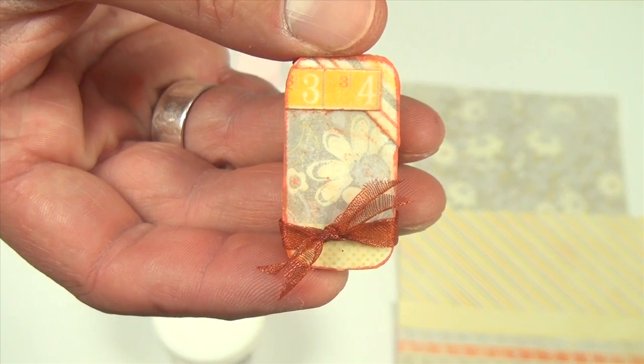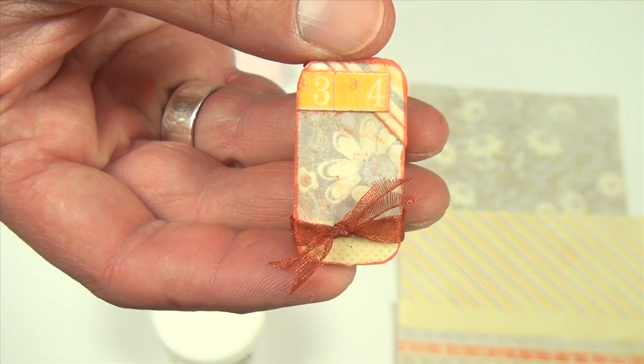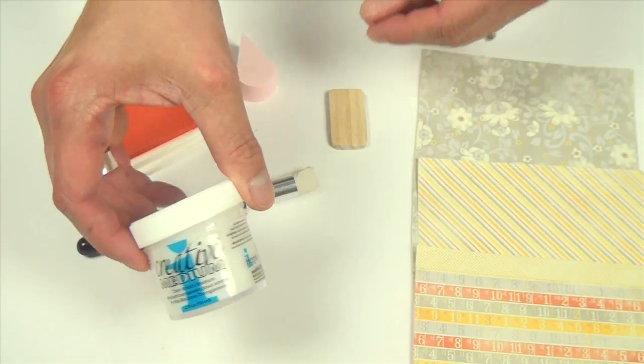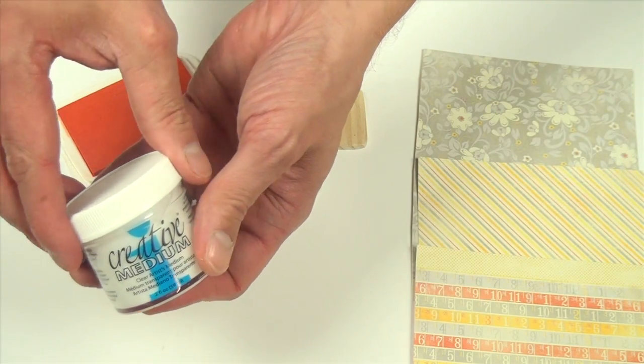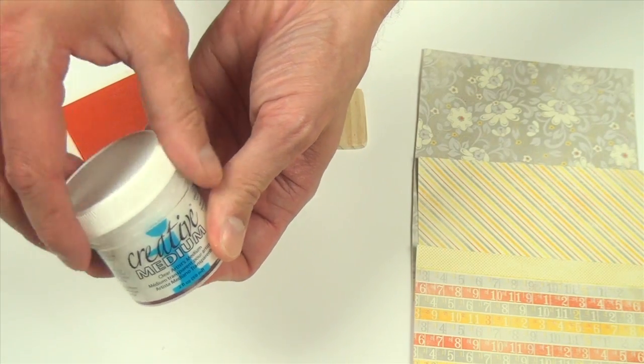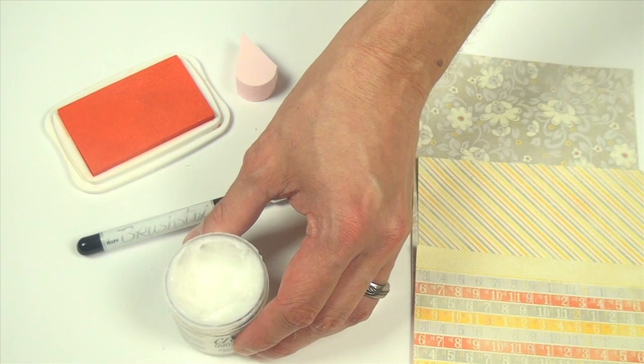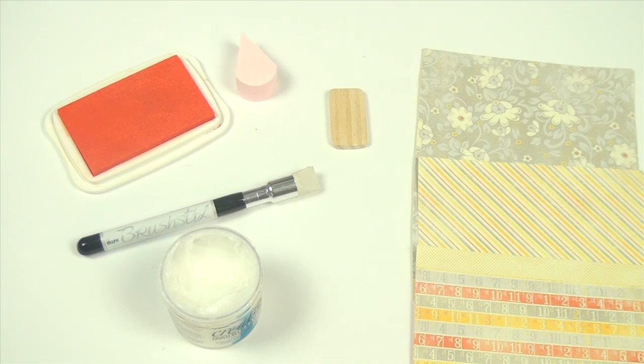Take collage to a smaller scale using hand-cut Monterey pine. We're going to begin with our creative medium in the original finish. We'll be using this for adhering down our pieces of paper as well as finishing off and sealing our finished collage.